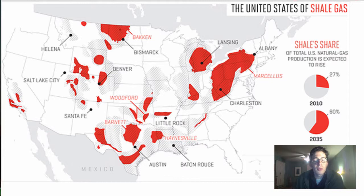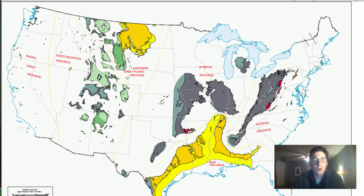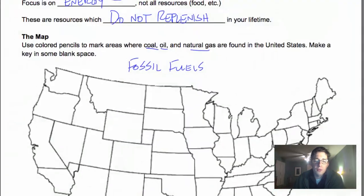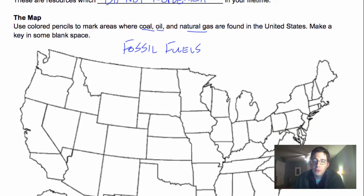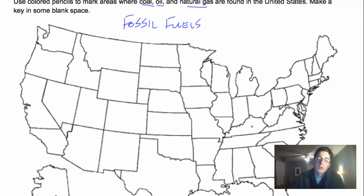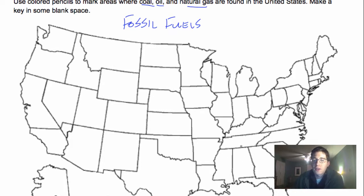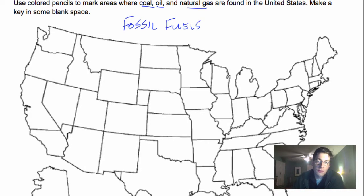These tend to overlap one another. And look over here out in the Midwest, Western United States area — we've got a lot of oil and natural gas found out there. That's very similar to where we find our coal. So these fossil fuels are all related to one another. The reason I have this map is so you can use those maps I just showed, found on the website, and start to fill in different colors where those areas are, just for your own reference.